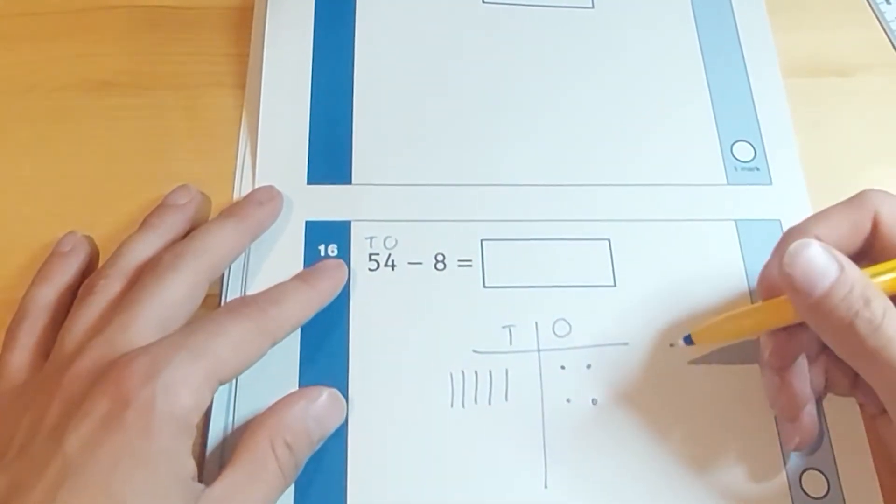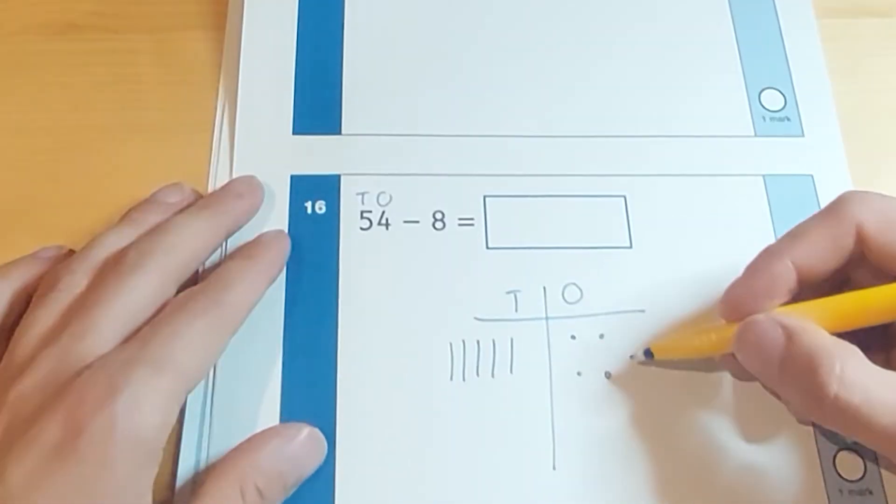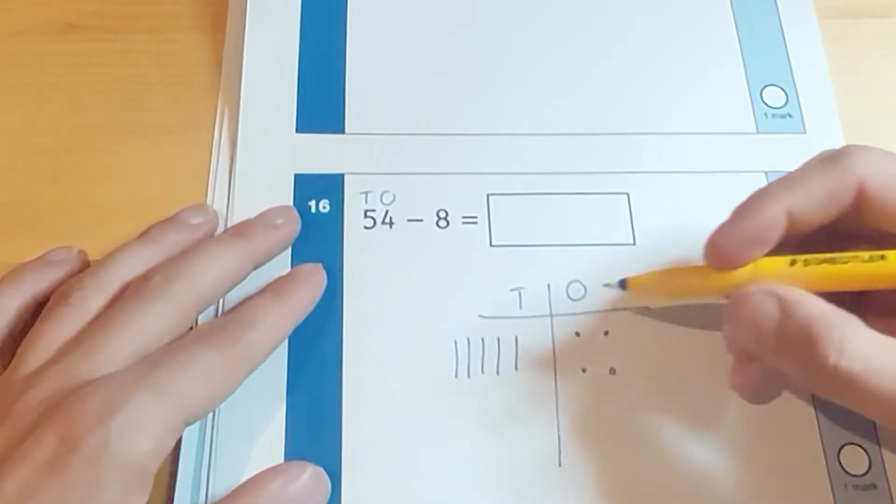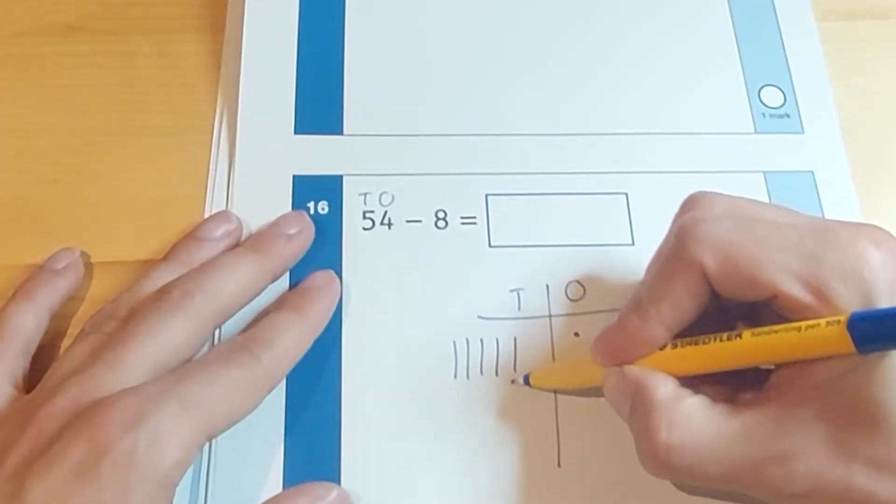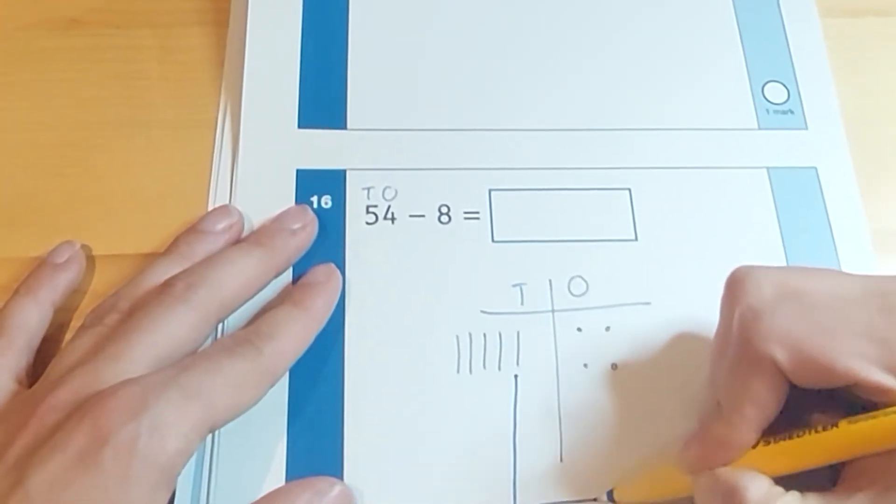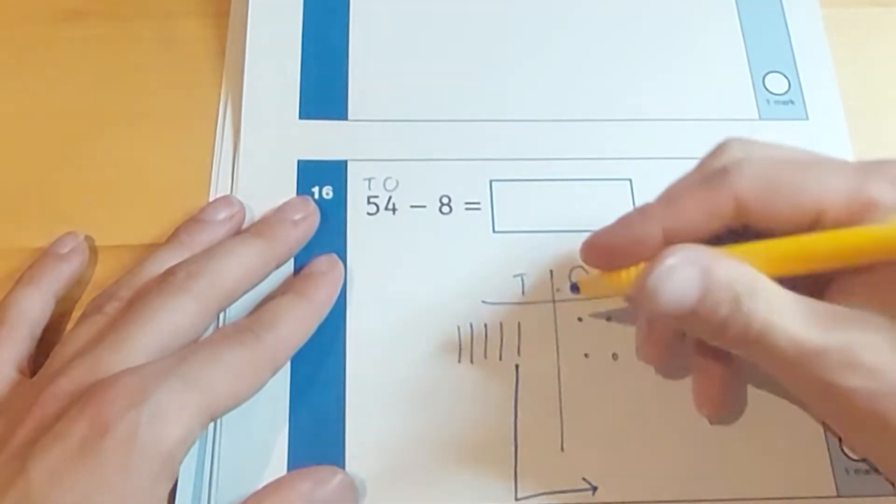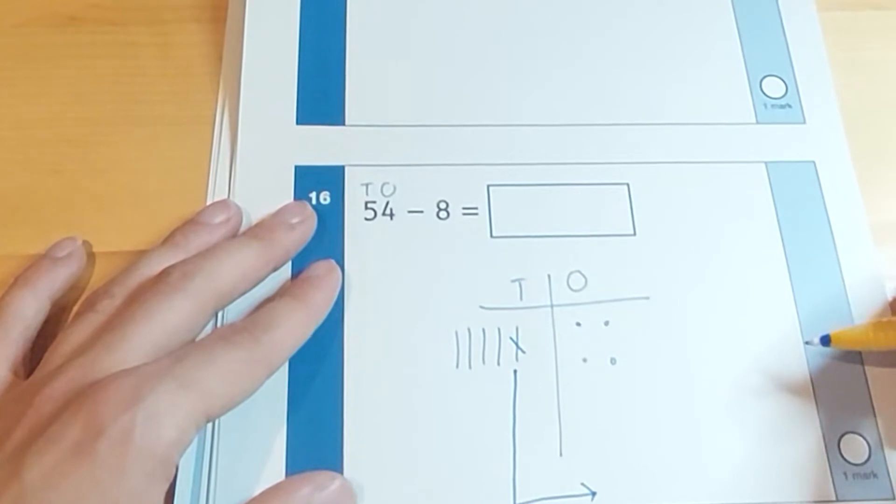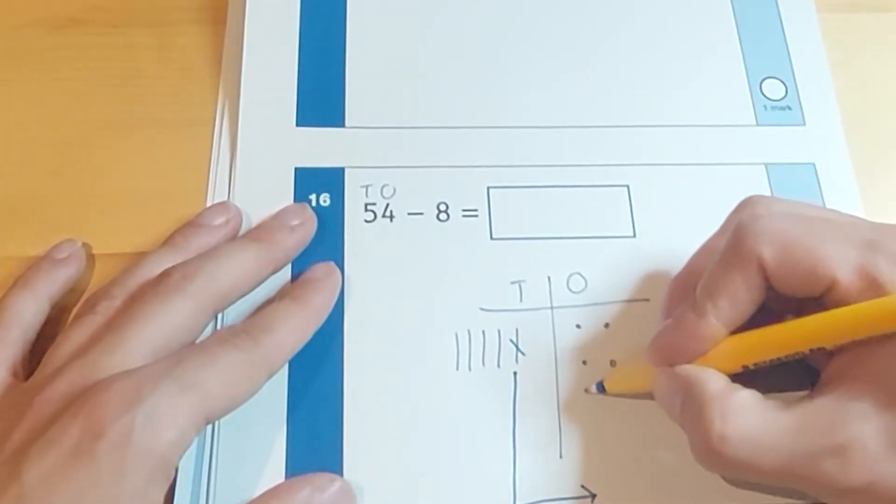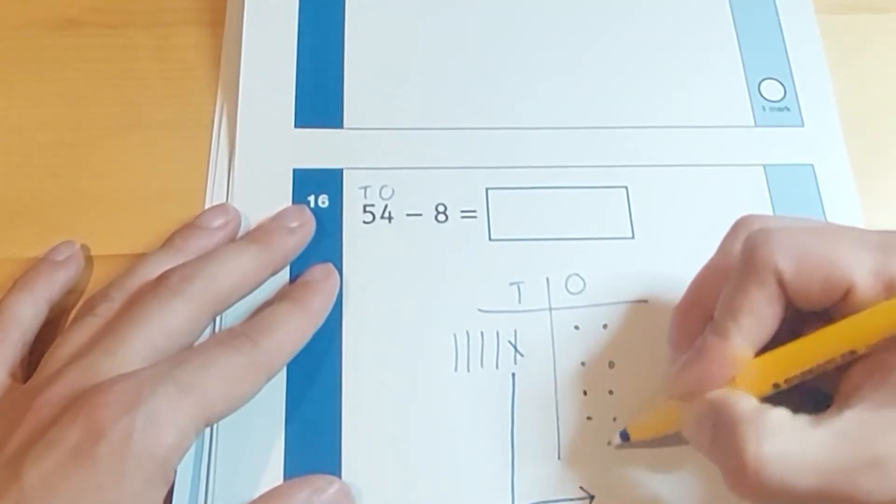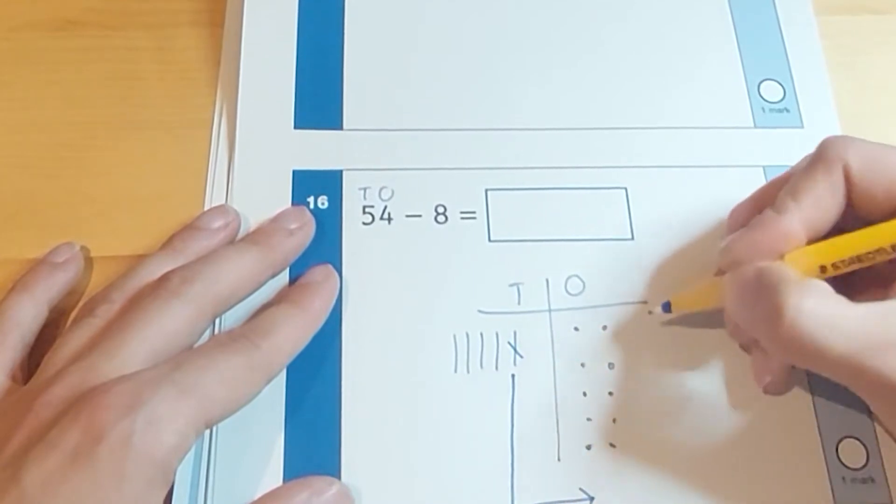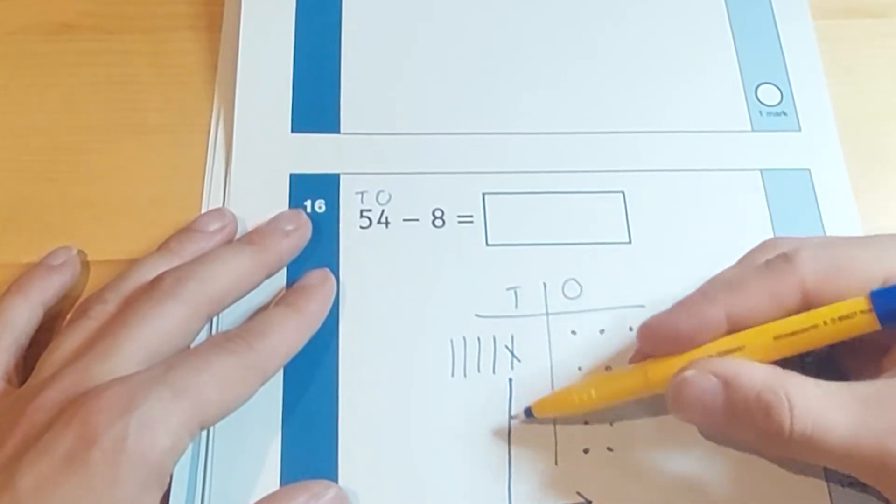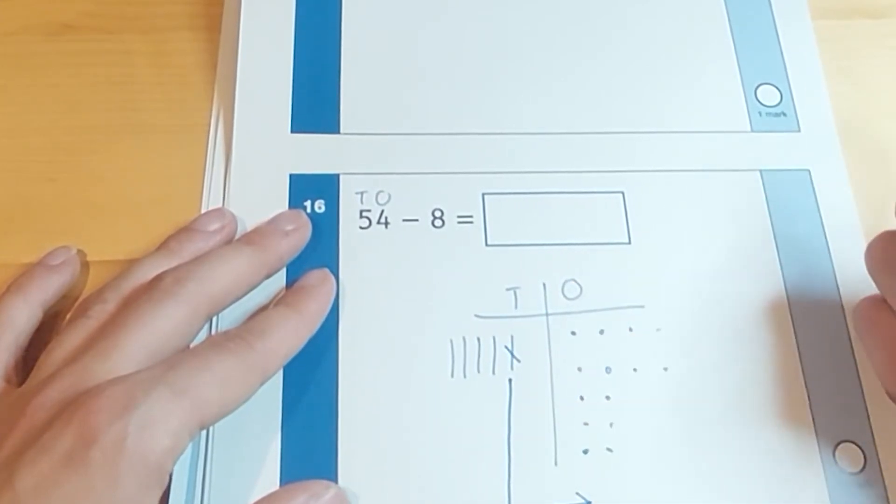Now we're going to take away eight ones. But uh-oh, we can't do that. There are only four ones here. So what we're going to do is we're going to borrow a 10. And this is how we teach them. We borrow it. We draw a line like this. And it now moves from the tens into the ones. I cross it out because I've used it. Now I've exchanged. I've borrowed a 10 from the tens and I've made it into 10 ones.